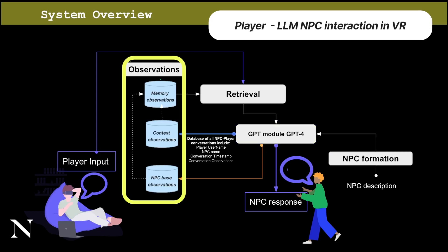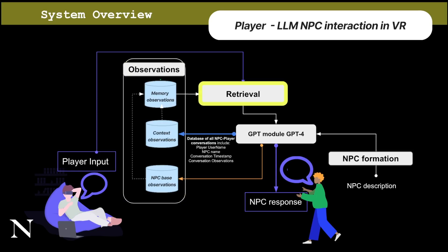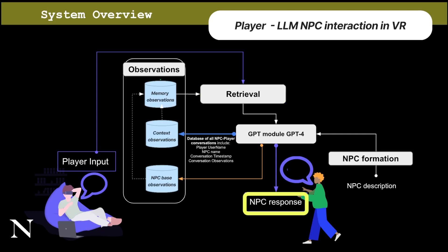The GPT module then creates base observations about our NPC and the context in which the interaction takes place. Once we have player input, it is passed to our retrieval function that calculates the recency and relevancy of past observations and passes that to the GPT module to generate the NPC response.